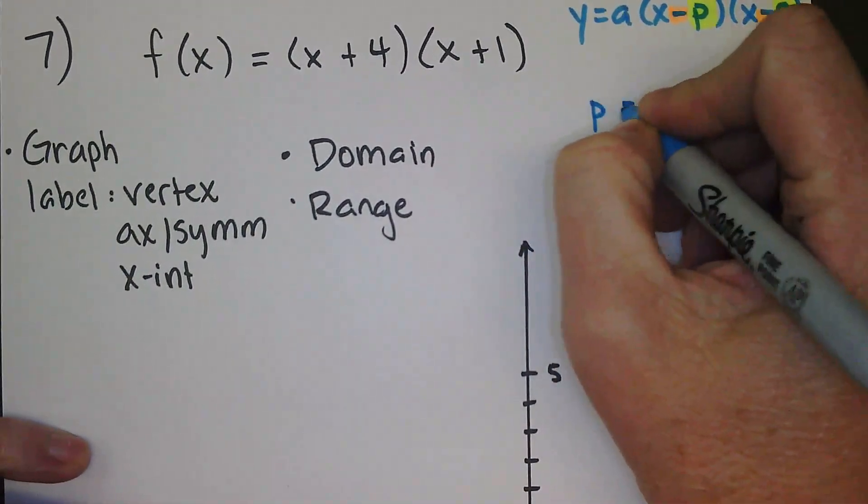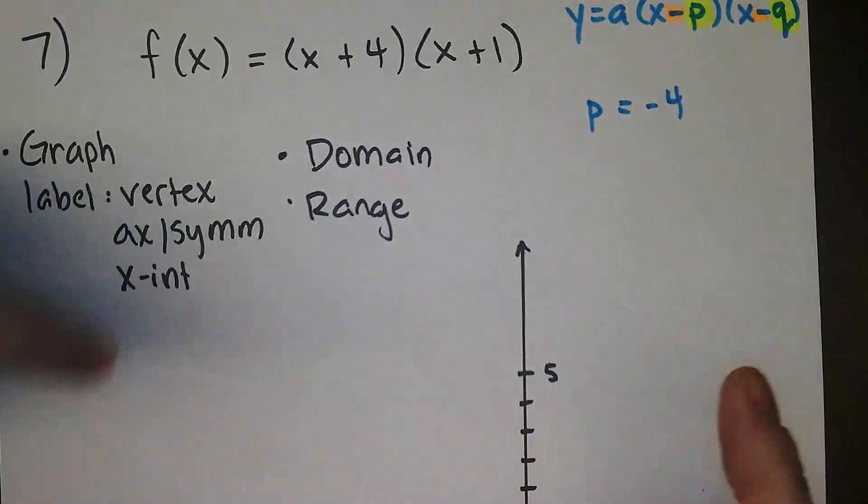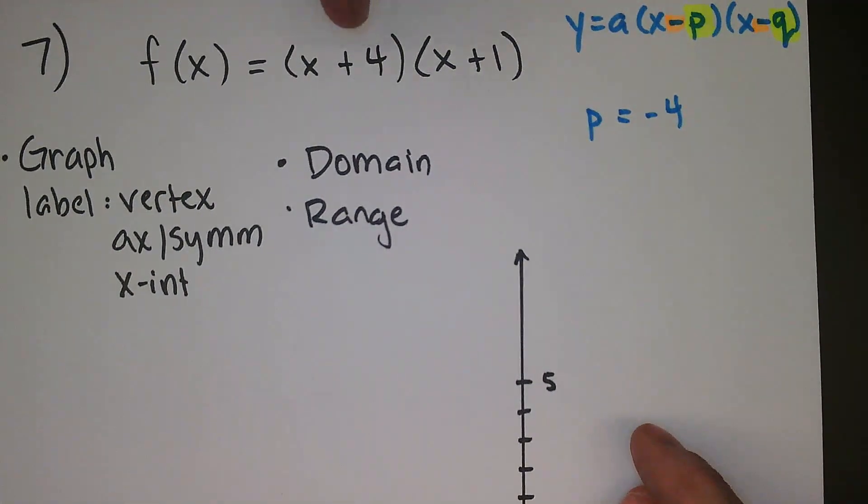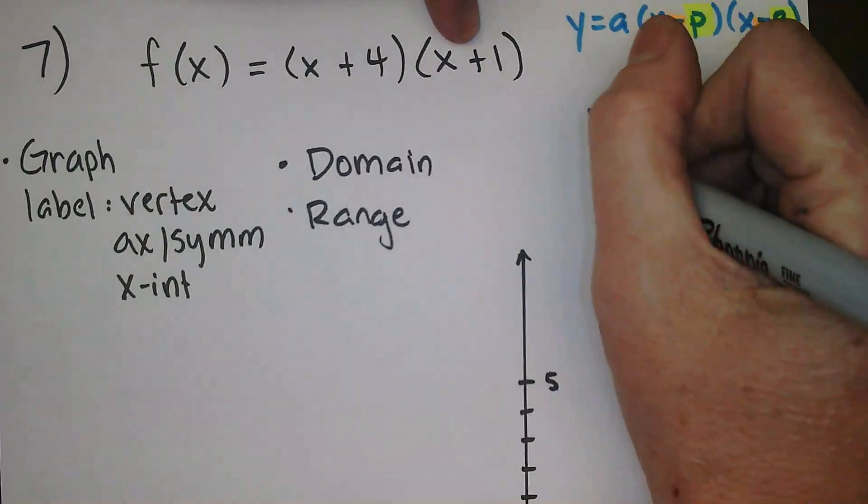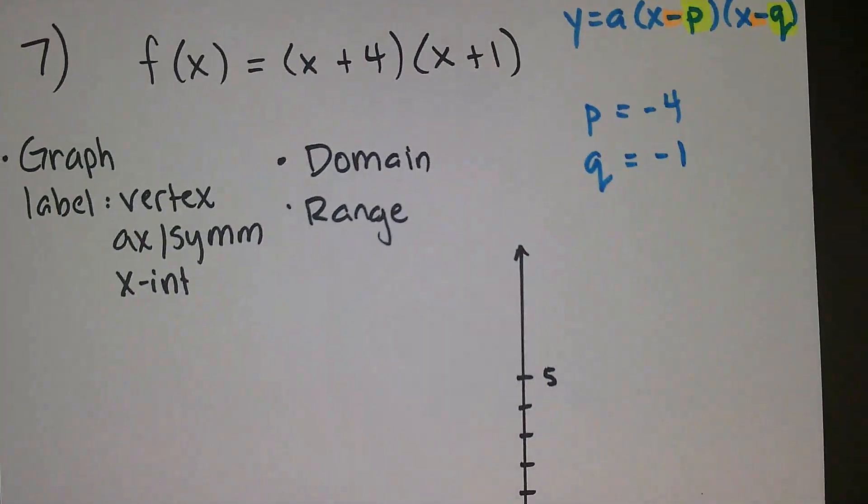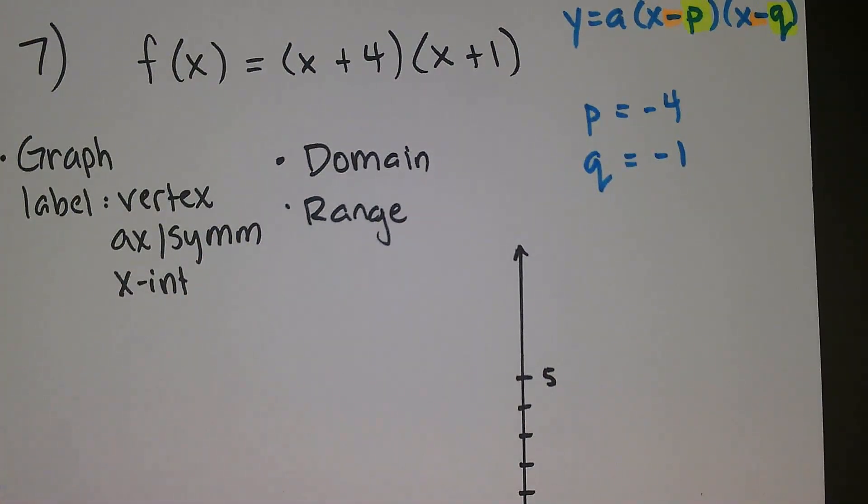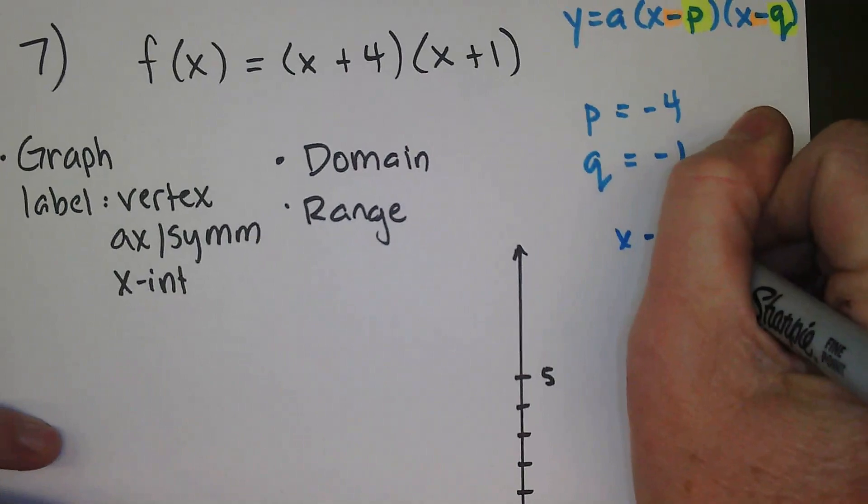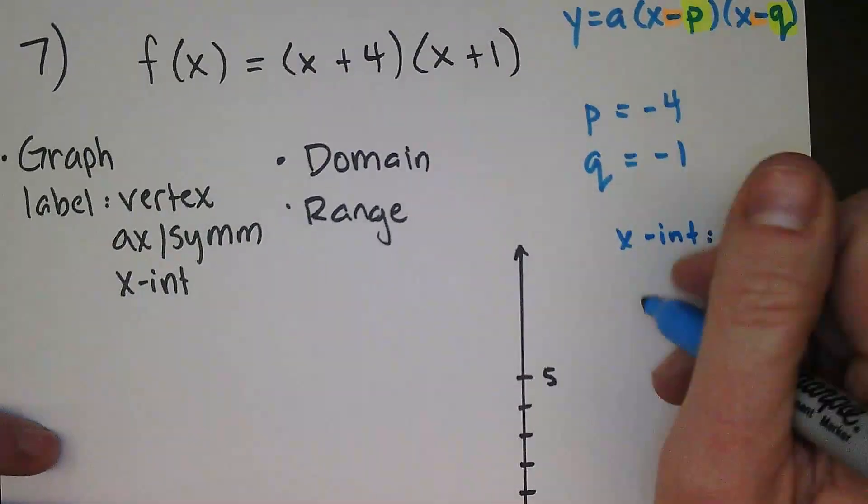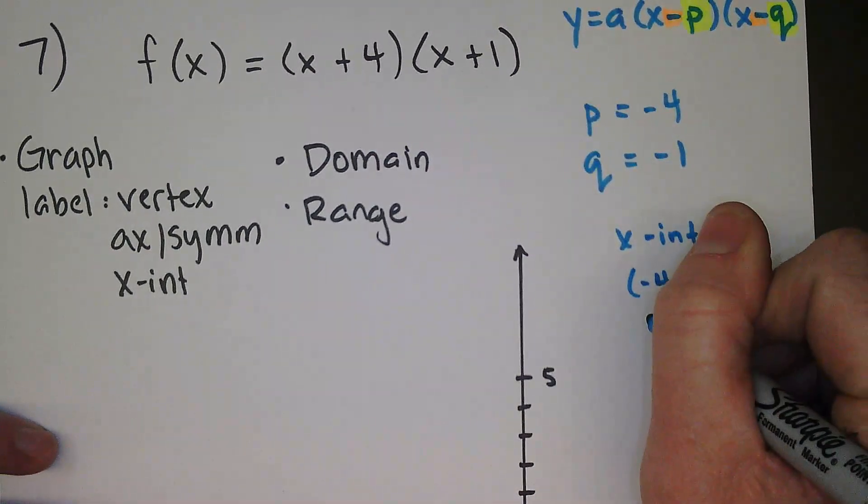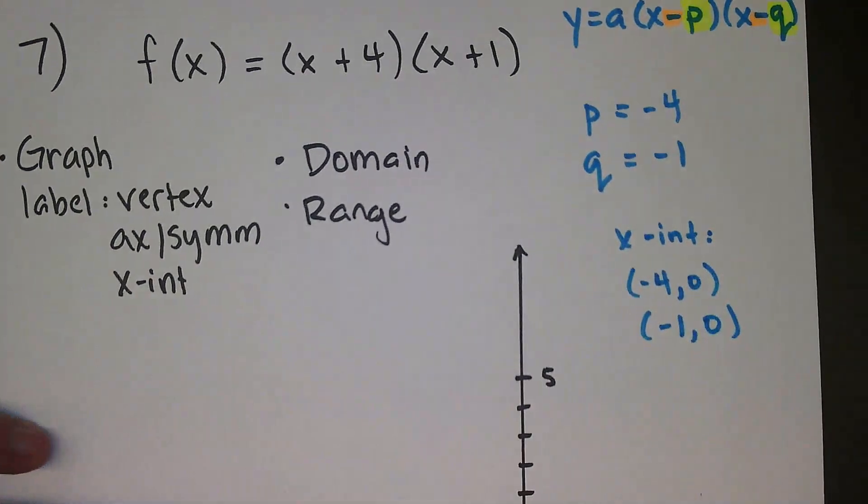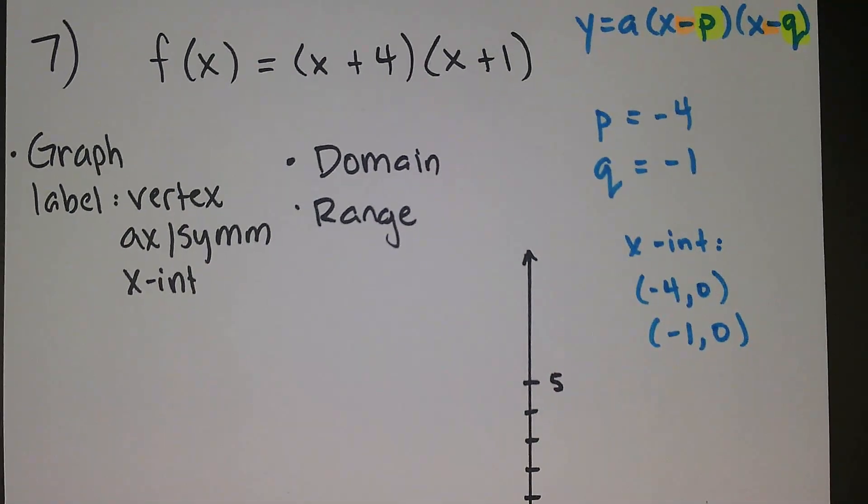So my p-value is actually a negative 4. This is what's supposed to be subtraction, so it would have to be minus minus. My q-value is a negative 1. So that means my x-intercepts are at those two locations, at the coordinate negative 4, 0, and at negative 1, 0. So I'll be able to plot those points.